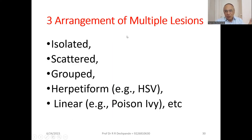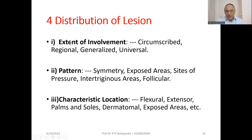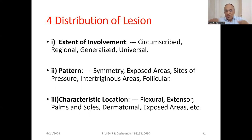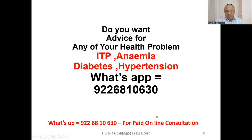Arrangement of multiple lesions: whether they are isolated, scattered, or grouped. Then herpetiform like HSV, or linear like poison ivy. Distribution of the lesion — extent of involvement: whether they are circumscribed, local, generalized all over the body, or universal. Pattern: whether there is symmetry between right and left sides. Exposed areas — not covered by clothes. Site of pressure — where pressure is coming. Then intertriginous areas like the inguinal region. Follicular pattern — where the hairs are. Characteristic location: whether it is on the flexure surface, extensor surface, palms and soles, dermatomal according to the nerves, or exposed areas.